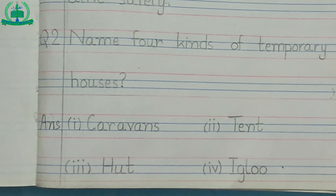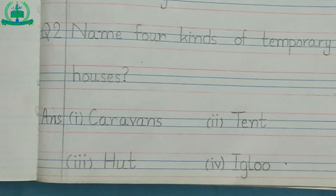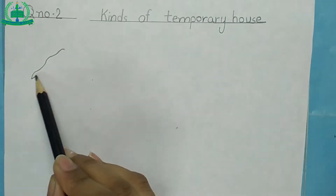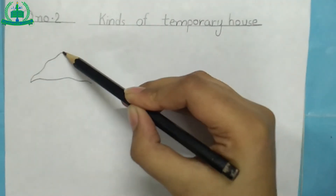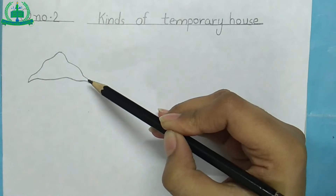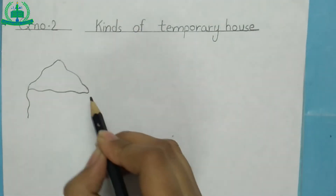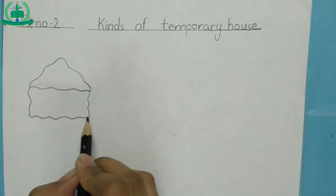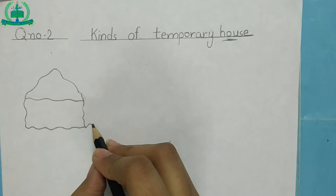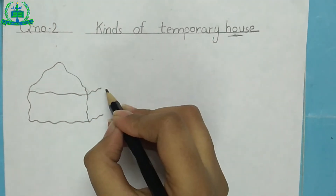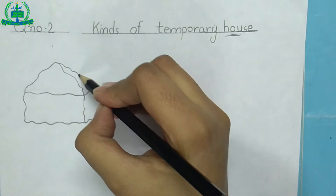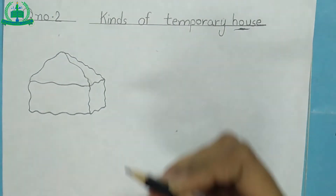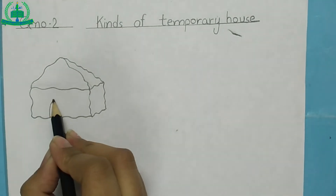Draw diagrams of hut and tent next to question number 2. First we draw a triangle with zigzag lines. Now we make a rectangle with zigzag lines. Then make 2 small zigzag lines and join both sides.